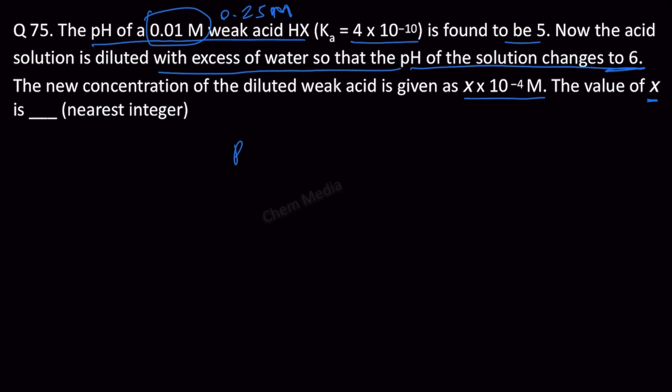So we know that pH is equal to negative logarithm of H plus ion concentration. If the pH is 6, this means that this is negative logarithm of 10 to the power minus 6. So that we can get 6 on both sides. So therefore, the H plus ion concentration is equal to 10 to the power minus 6.